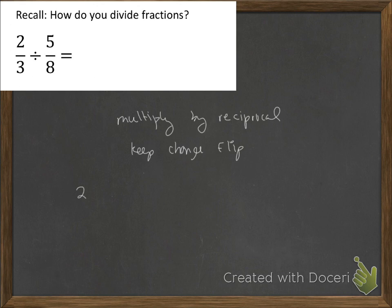So what does that mean? That means we keep the 2/3. We change—I'll make this red here to emphasize it—we change the division to multiplication, and then we flip the fraction. So instead of 5 over 8, it becomes 8 over 5. So at this point, you can try to reduce. I don't see really any way to reduce. So then we just multiply across. So 2 times 8 is 16, 3 times 5 is 15. So the answer is 16 over 15.